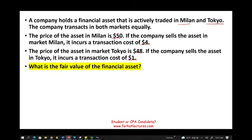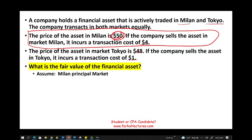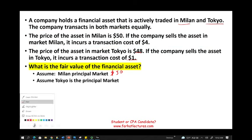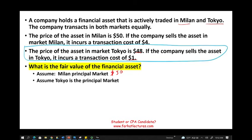I'm going to show three scenarios. First, if Milan is the principal market — if the problem states Milan has the most volume — then the fair value is simply $50. Second, if Tokyo is the principal market, then even though Tokyo's price of $48 is lower than Milan's, we go with the principal market price of $48. The principal market reflects the true price because it has the highest activity.